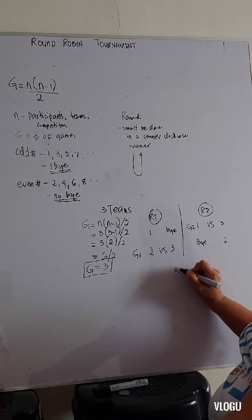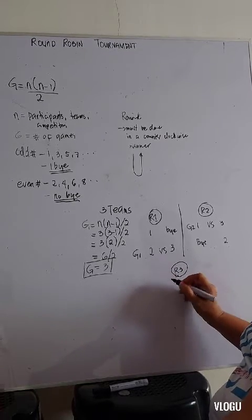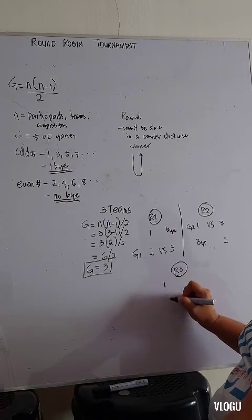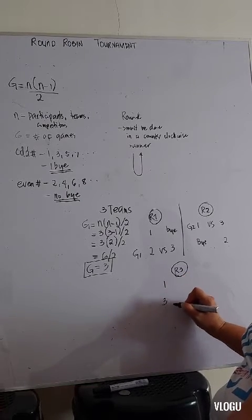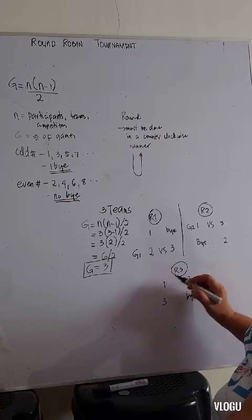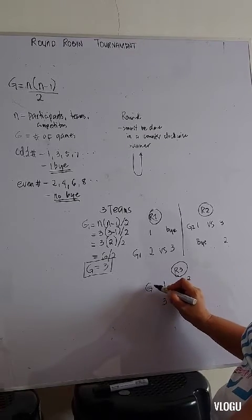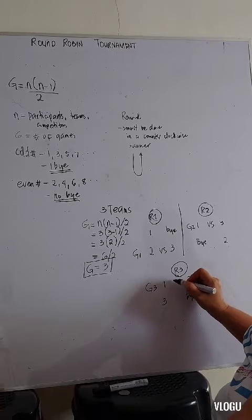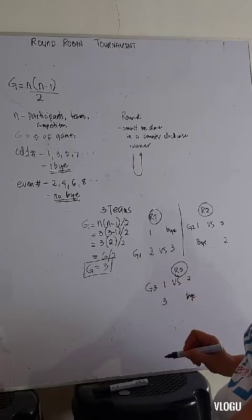And lastly, let's have round 3. So we have team 1, team 3, buy, and team 2. So basically, this is our game 3 to be played between team 1 versus team 2.